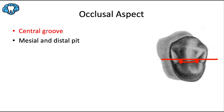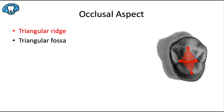The central groove is the developmental groove that connects the mesial and distal pits. It makes a slight smile shape with a slight lingual curvature, and is always located lingual to the center of the tooth. The pits are the very deepest part of a groove. Triangular ridges are highlighted — they're called triangular ridges because the base of the ridge is wider than the cusp tip where the ridge originates.